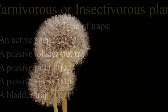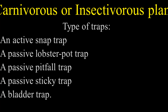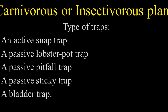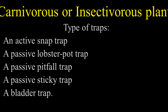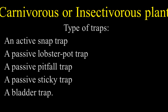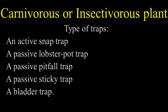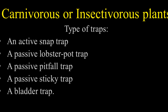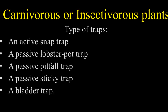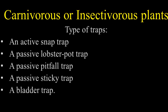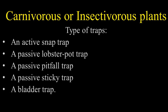Carnivorous plants can have any of the following traps: an active snap trap that catches prey when triggered by brushing against its sensitive hairs; a passive lobster pot trap that ensnares prey with no chance of escape; a passive pitfall trap containing digestive fluid into which prey fall; a passive sticky trap where prey becomes stuck on the trap's hairs; and a bladder trap that captures prey by pulling them in like a vacuum.